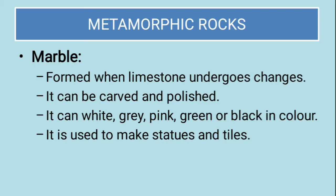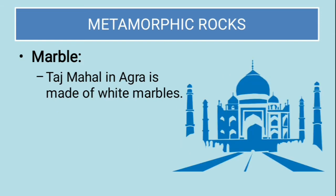Then marble, formed when limestone undergoes changes. It can be carved and polished. It can be white, grey, pink, green or black in color. It is used to make statues and tiles. The Taj Mahal is a famous example of a monument built out of white marble.